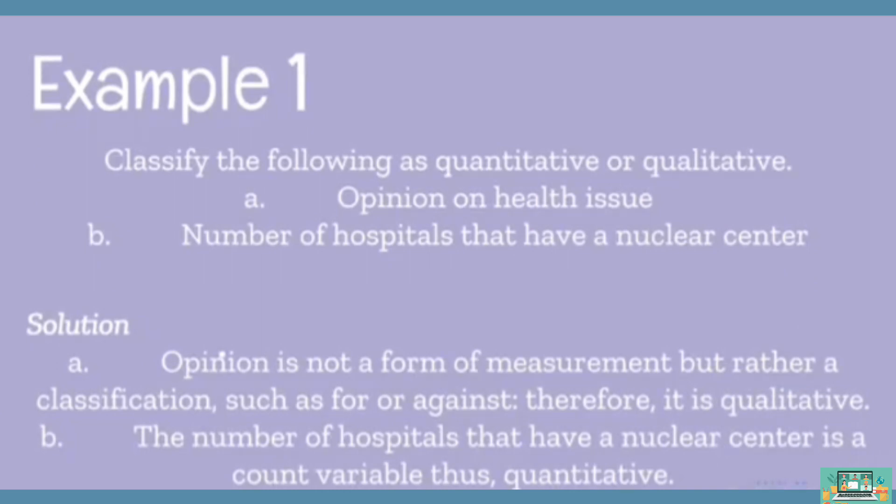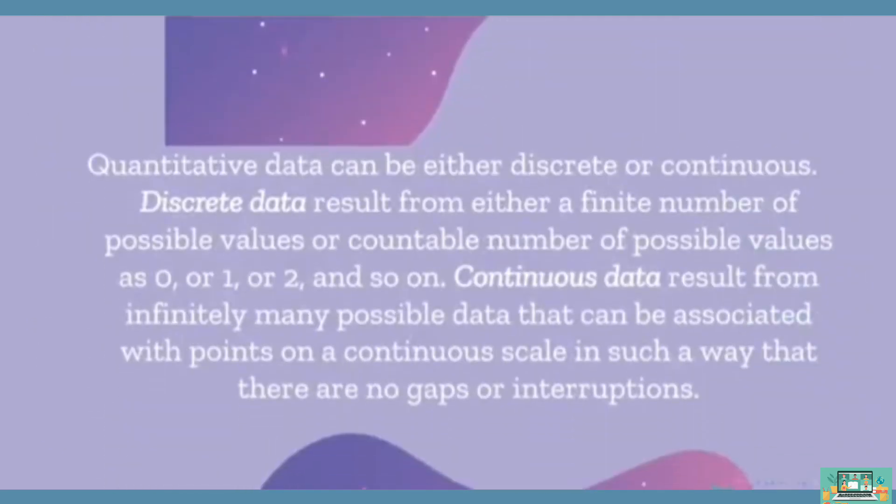Let us now have example number 1. Quantitative data can be either discrete or continuous. Discrete data results from either a finite number of possible values or countable number of possible values, as 0, or 1, or 2, and so on. Continuous data results from infinitely many possible data that can be associated with points on a continuous scale in such a way that there are no gaps or interruptions.